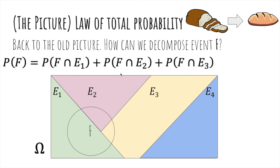We can write this as the probability of F intersect E1, which is the green part, plus F intersect E2, plus F intersect E3. Let's throw in F intersect E4 for completion, because it's actually zero, because there's no overlap.